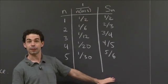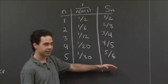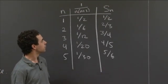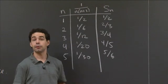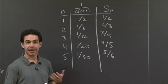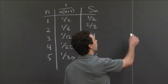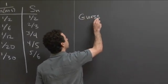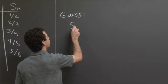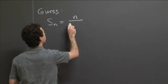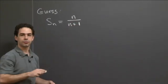We could probably guess at this point that the next one is going to be 6 sevenths and 7 eighths and so on. So that would be a guess. One way we can actually prove this is, so we have this guess that, let me write it down, guess is that Sn is equal to n over n plus 1.